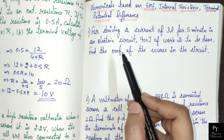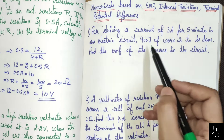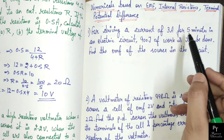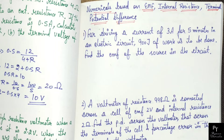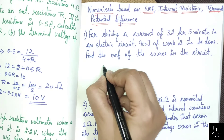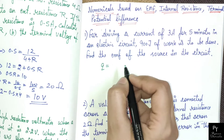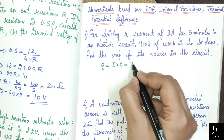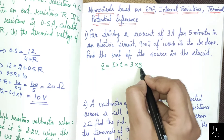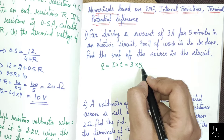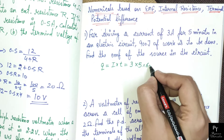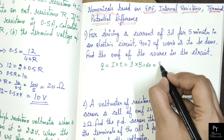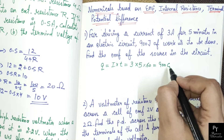EMF is work done in moving a charge in the circuit. Work done is given, and using current and time we can easily find charge also. The amount of charge that flows through the circuit in 5 minutes: current is 3 and time is 5 minutes, converting to seconds. After multiplication you will get charge equals to 900 coulombs.